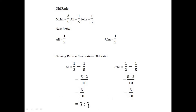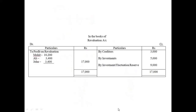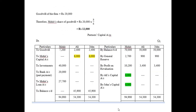The gaining ratio is 1:1 — not 3:3. That was a correction. Now let us continue. You know how to prepare the revaluation account, so we focus on the next section.